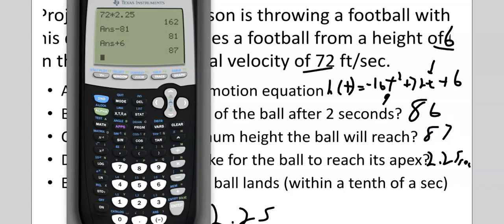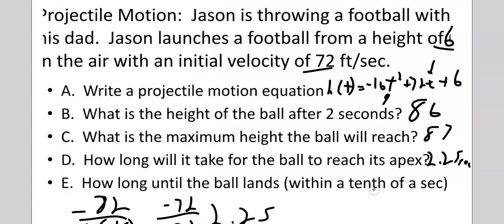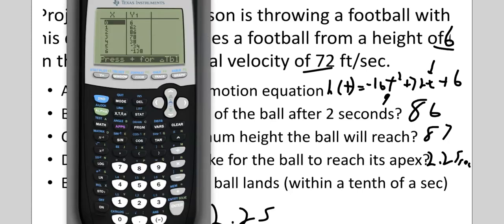So, let's look at our calculator again. If you see in 2 seconds, it's 86 feet. 3 seconds, it's 78. So, that makes sense. A little bit after 2 seconds, it went a little bit higher, just one foot higher, then started to come back down. And how long until the ball lands? Well, that's going to be between 4 and 5 seconds.